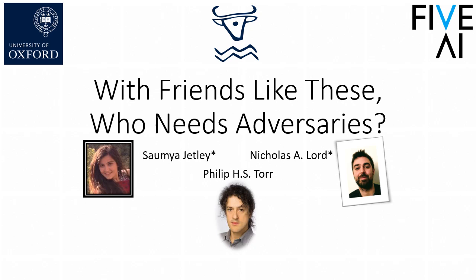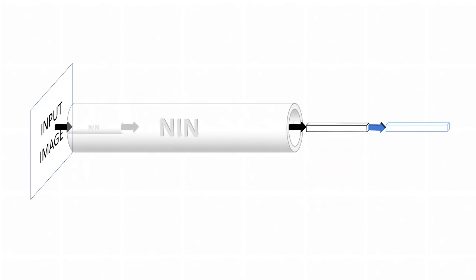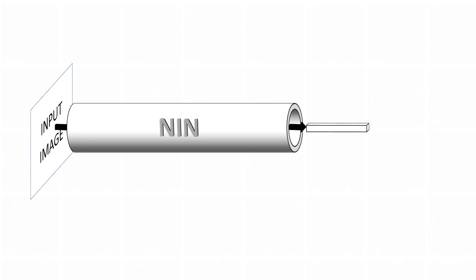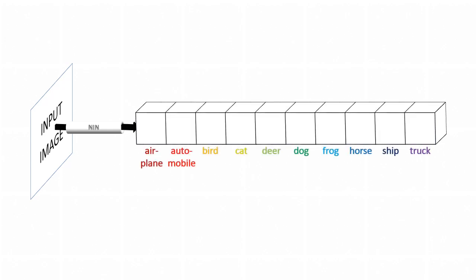This work looks to understand the adversarial vulnerability of deep CNNs by taking a closer look at how they respond to their inputs. To begin, let's take this Network in Network C for 10 architecture, discard the softmax, and focus on the output of the layer before it. These are class scores — how much the net thinks that the class corresponding to each node is present in the input.